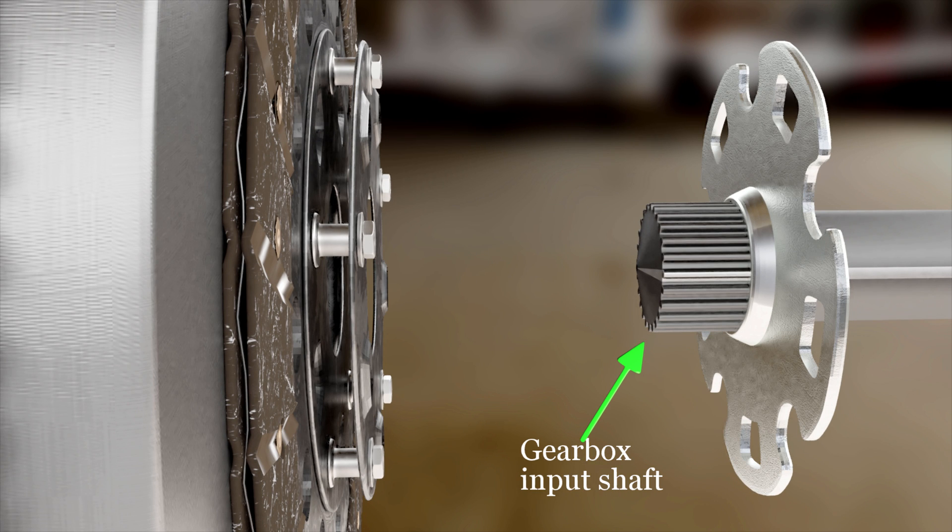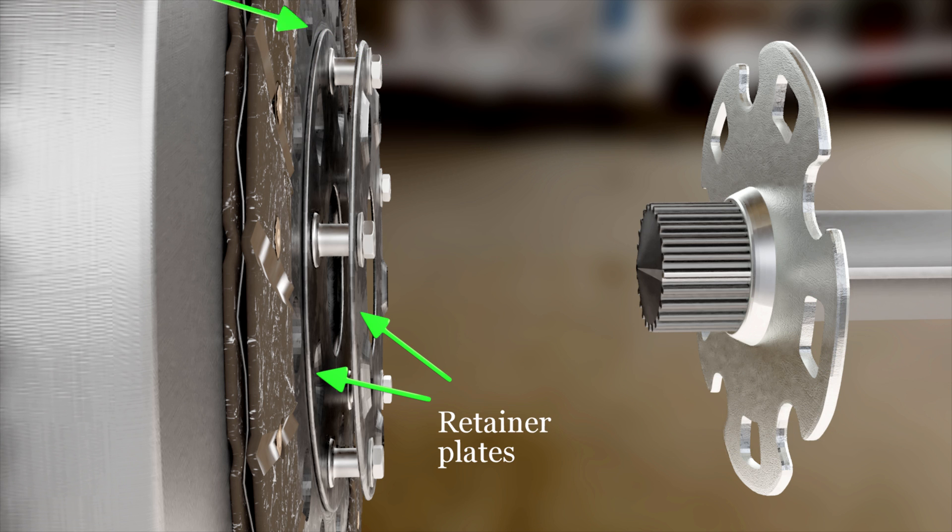The input shaft to the gearbox is connected to the splined hub. On the other hand, retainer plates are riveted to the clutch plate firmly.